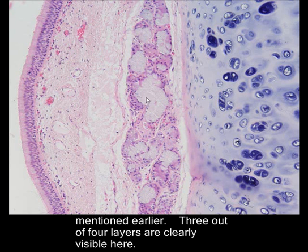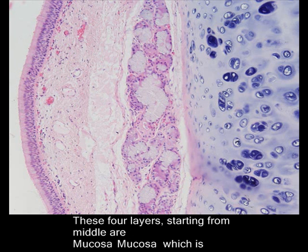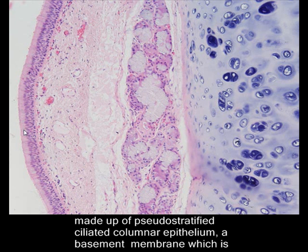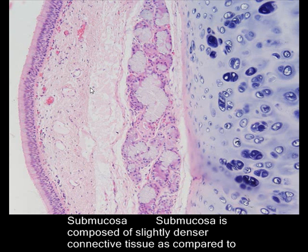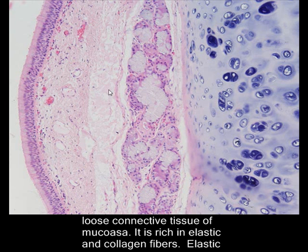These four layers starting from the middle — this is the inside of trachea — are mucosa, which is made up of pseudostratified columnar epithelium, a basement membrane just below the epithelium, and a layer of loose connective tissue. The basement membrane is made up of fibers, and the submucosa, which extends from here to here, is composed of slightly denser connective tissue as compared to the loose connective tissue of mucosa.